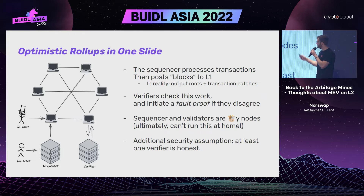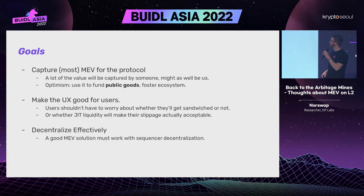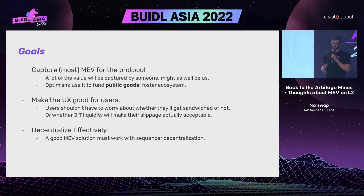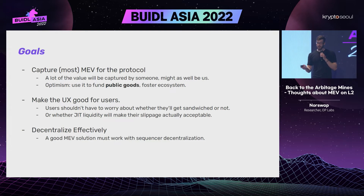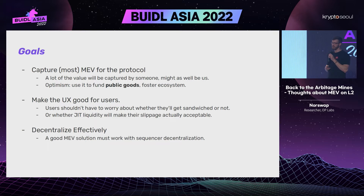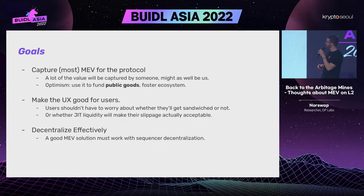So what are the goals for MEV on Layer 2? First, capture most of the value for the protocol to fund public goods. Second, make the user experience good — as a user, I don't want to think about being sandwiched or affected by just-in-time liquidity, which is another form of MEV. Third, decentralize effectively with multiple sequencers, and any MEV solution must be compatible with that goal.